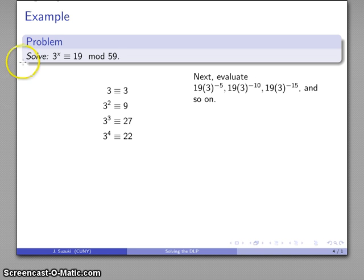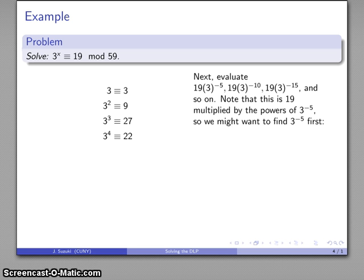I also want to evaluate 19 times 3 to power negative 5, negative 10, negative 15, and so on. So I'm going to evaluate all those negative powers. The thing to start with, I might want to start by finding 3 to power negative 5 first. So, the inverse of 3 mod 59 is 20, to the 5th power is 17.